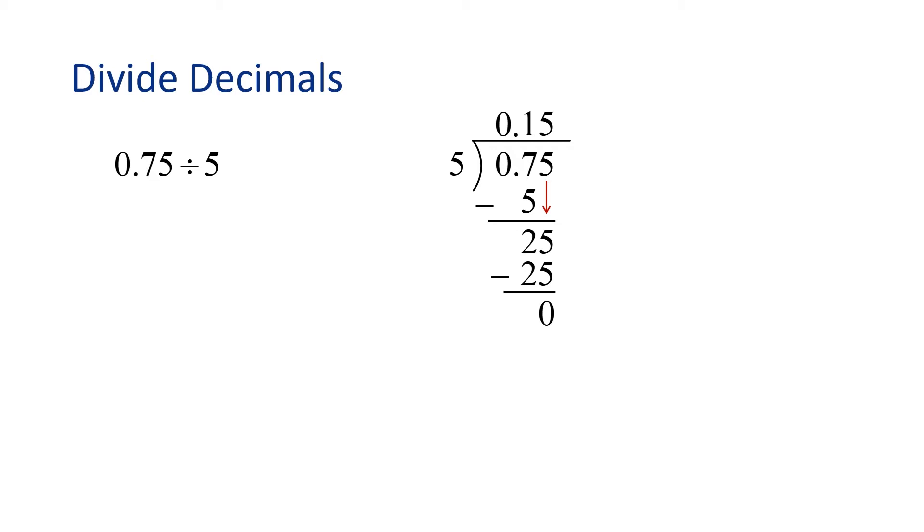So we found that 0.75 divided by 5 equals 0.15. Nice job.